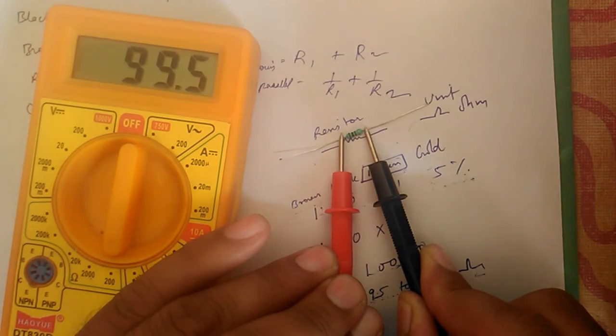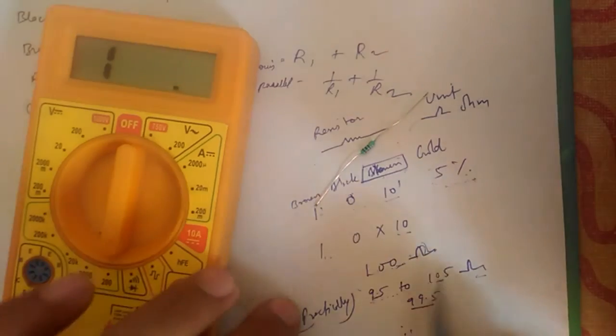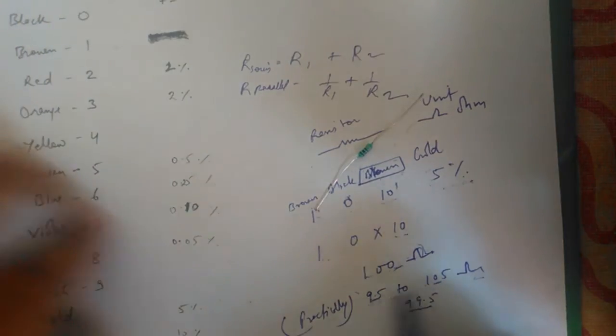Here it is showing 99.5, so as you see here, 99.5 I have written. This will lie in between this range.